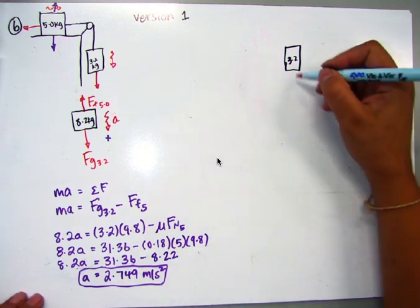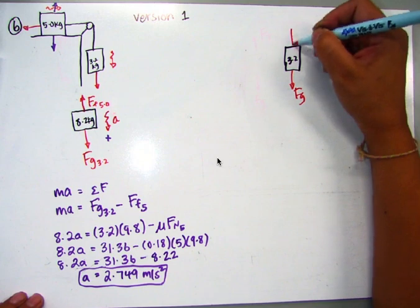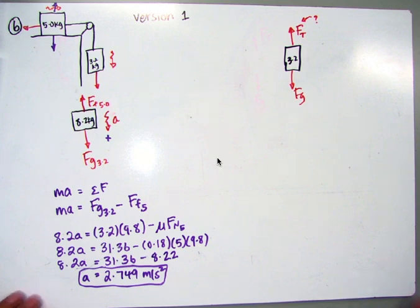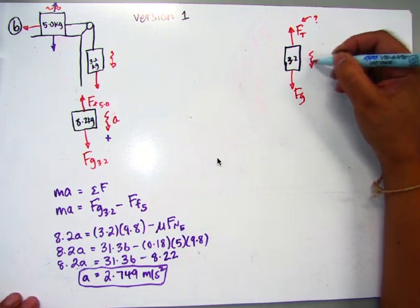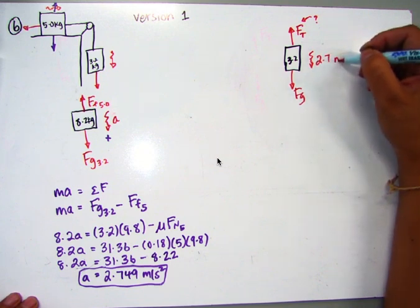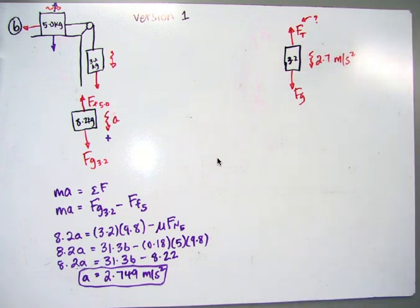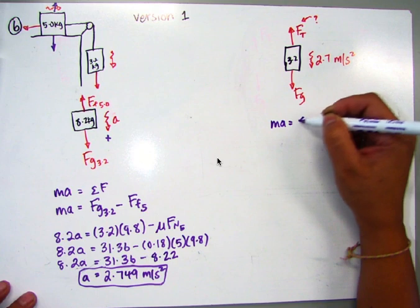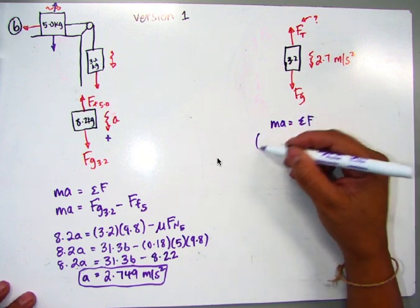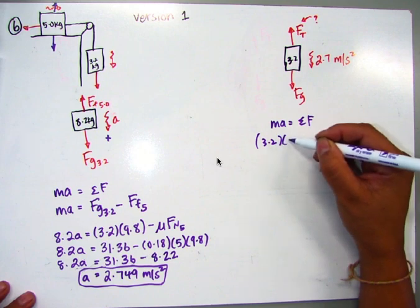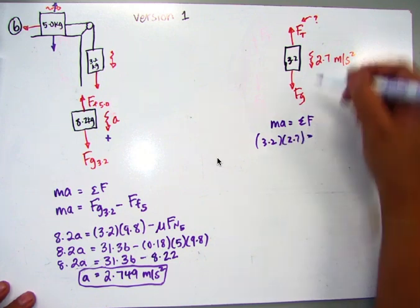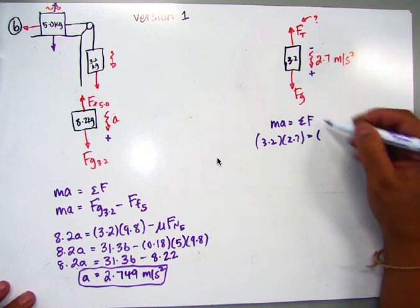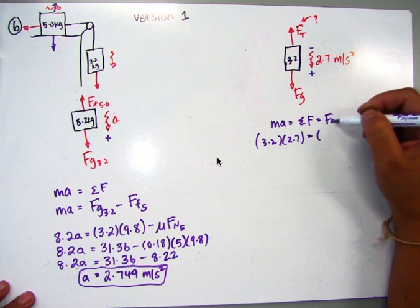Let's just look at the 3.2 kilogram mass, and just decide what's going on with this. We know that there are forces acting on it. We know that there's a force of gravity. We know that there's a tension force, and this tension force is my unknown, right? That's what the question is asking me to solve. Now I know that it's accelerating down at 2.7 meters per second squared, so I can go ahead and solve this equation. So looking at this free body diagram, I get Ma equals the sum of the forces.